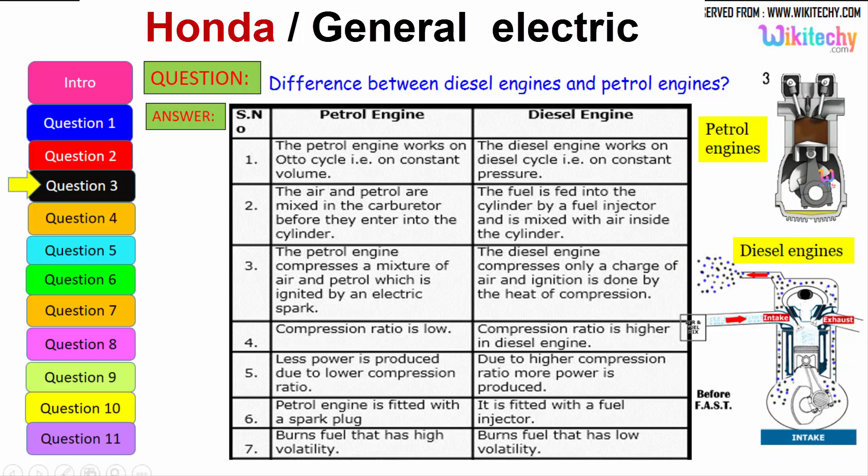Here the compression ratio is low whereas the compression ratio is higher. Less power is produced due to lower compression ratio; higher compression ratio, more power is produced. Petrol engine is fitted with a spark plug. It is fitted with a fuel injector. It burns the fuel with high volatility. Petrol is highly volatile whereas diesel burns low volatility liquid. Diesel is a low volatile liquid. These are some of the differences between the petrol engine and diesel engine.